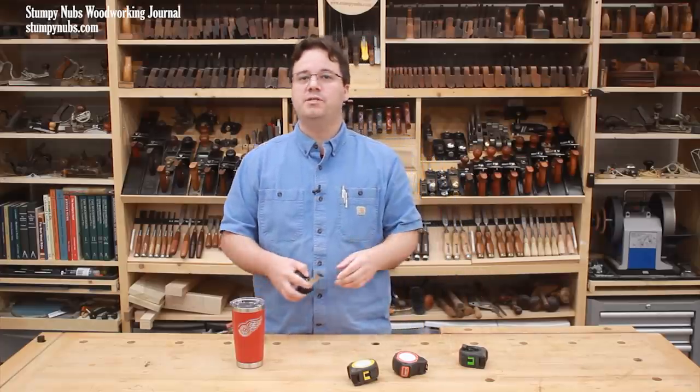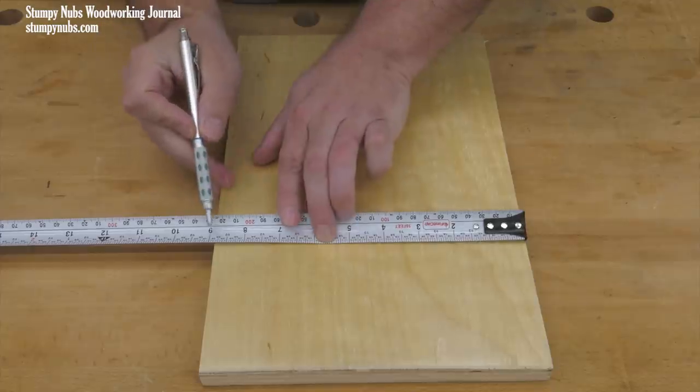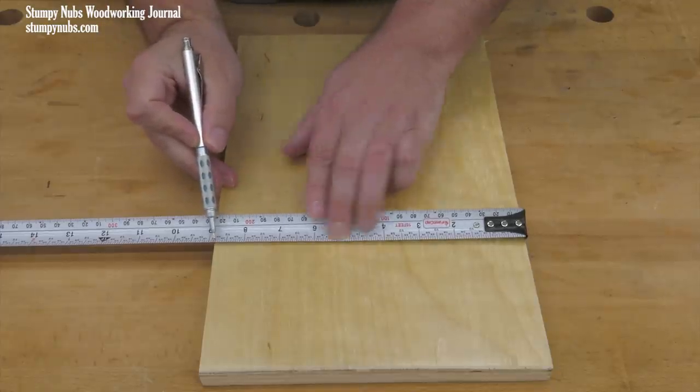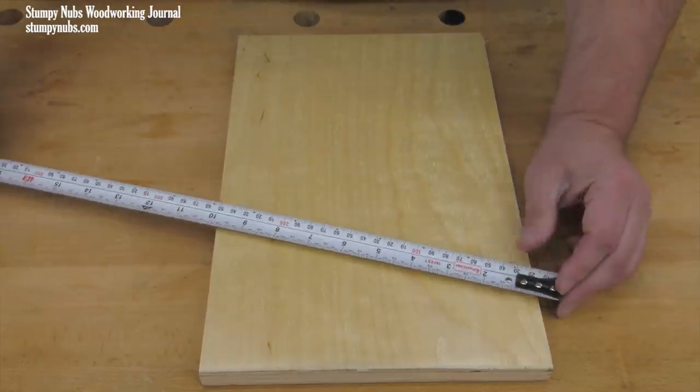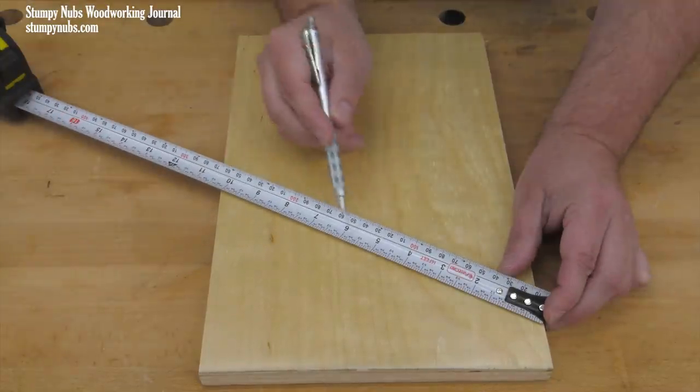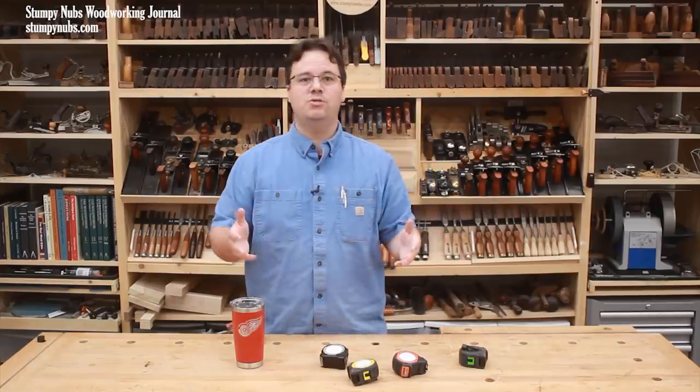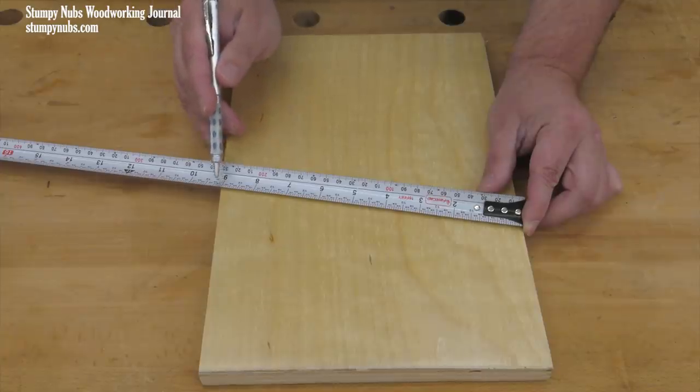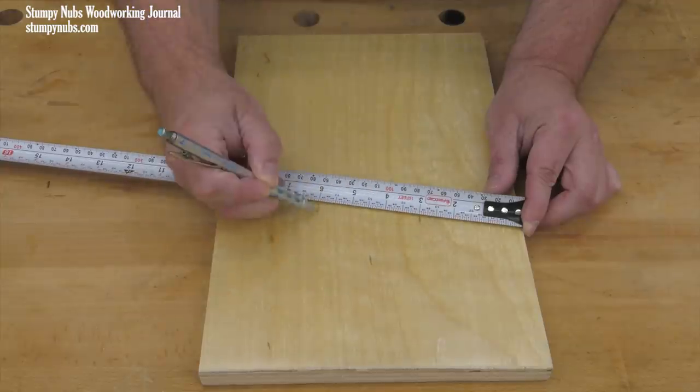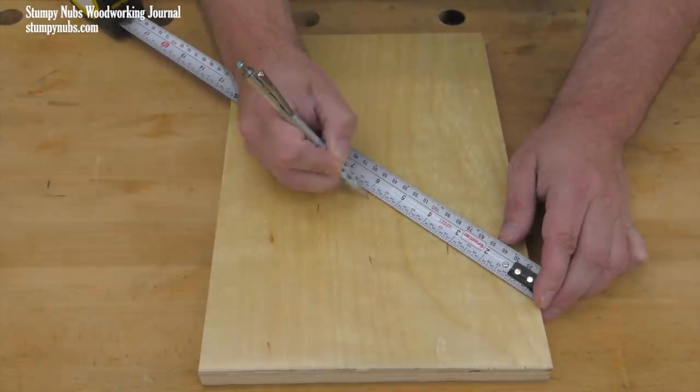Some of the best measuring tape secrets can help you do math. Let's say I want to find the center of a workpiece. Instead of dividing an odd fractional number like eight and seven eighths in half, I'll angle the tape to an even number like ten and divide that in half to find the center. The same method may be used to divide something into multiple equal parts. Nine is easily divided into three sections of three. Twelve is easily divided into four sections of three and so on.